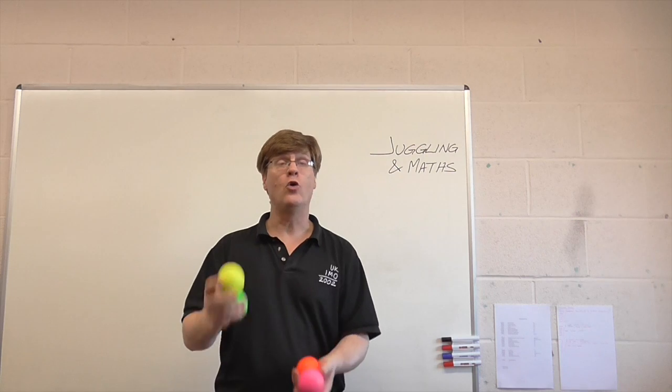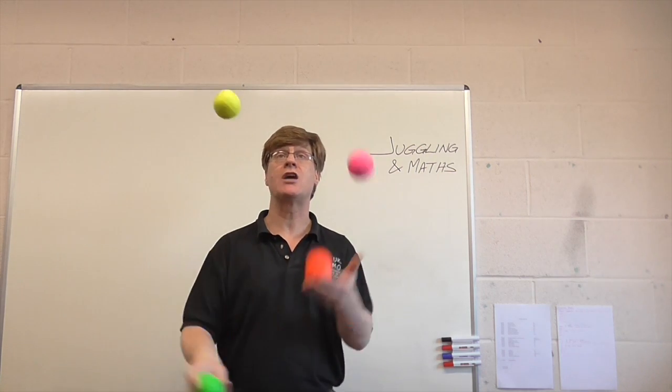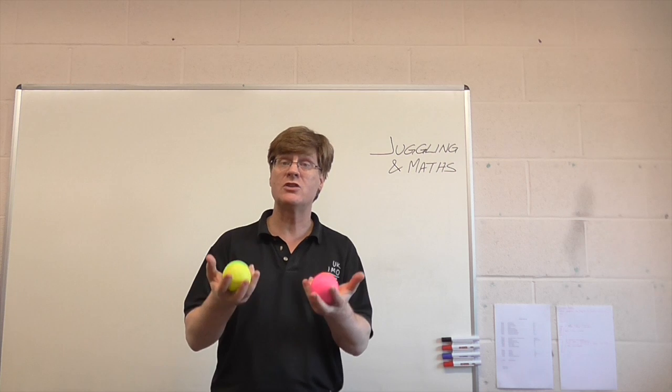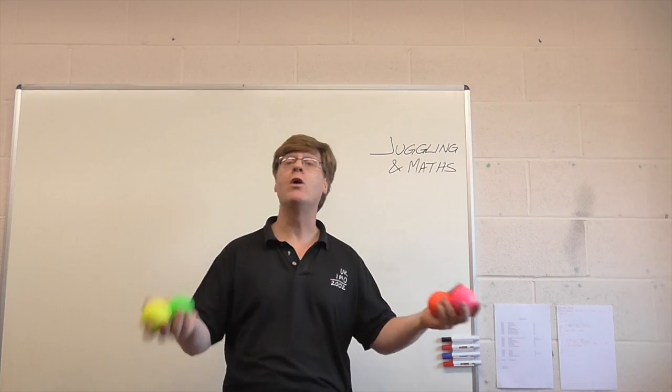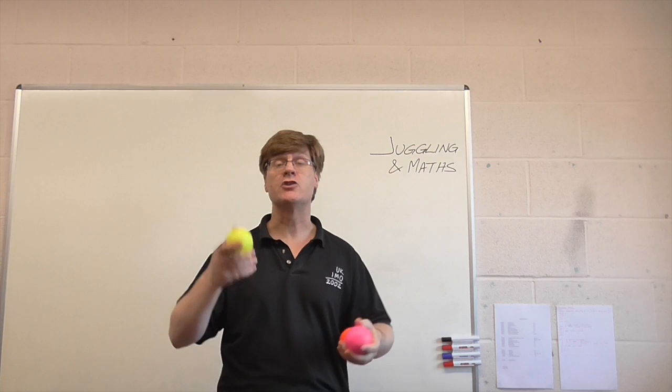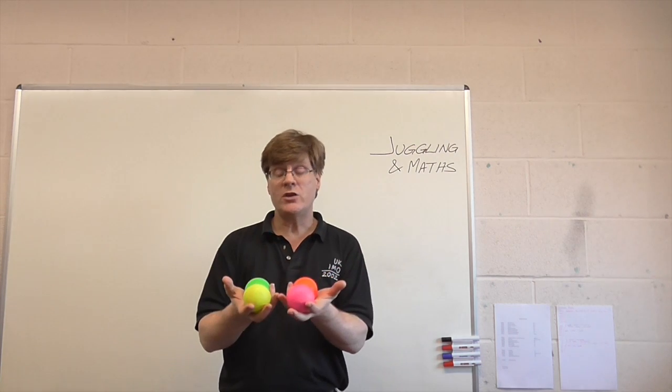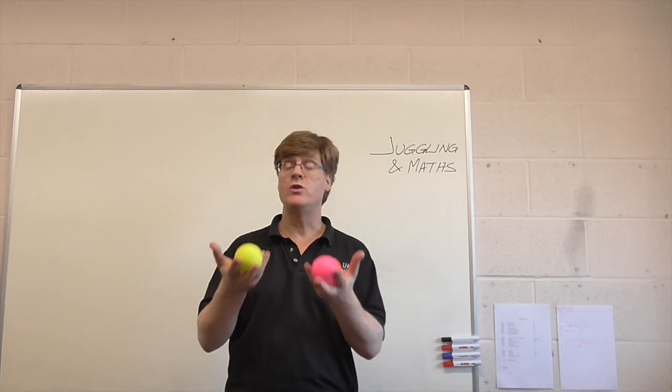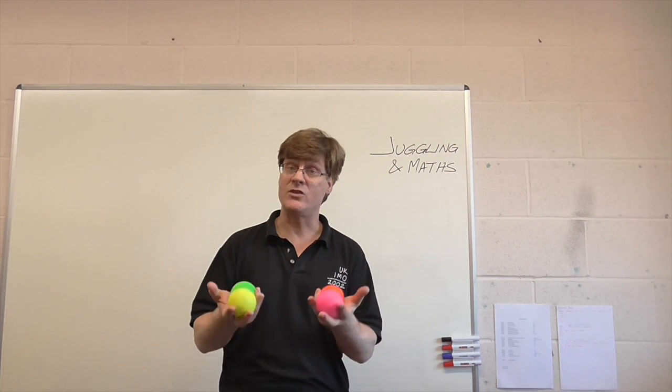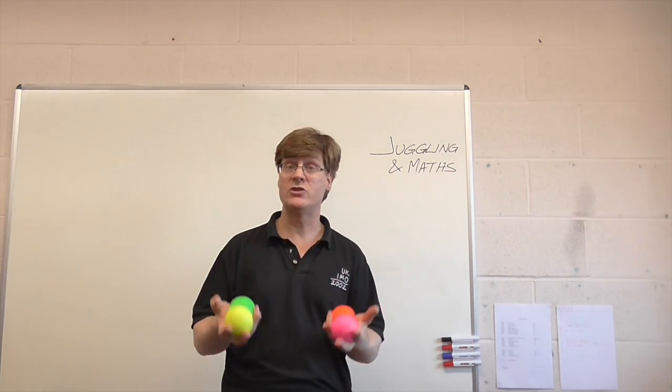So when I juggle four, all the throws are the same, the balls must come back to the same hands. If the throws are the same, I don't have a choice. Going to five, once again they'll swap over as I go one, two, three, four, five, one. So we can see there that with an odd number they will change hands. With an even number they will stay in the same hands if all the throws are the same.